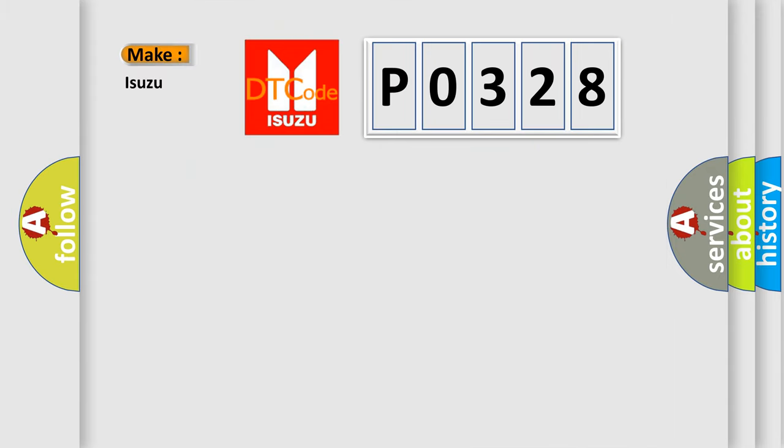So, what does the diagnostic trouble code PO328 interpret specifically? The basic definition is CAN-H, low speed network faulty signal.